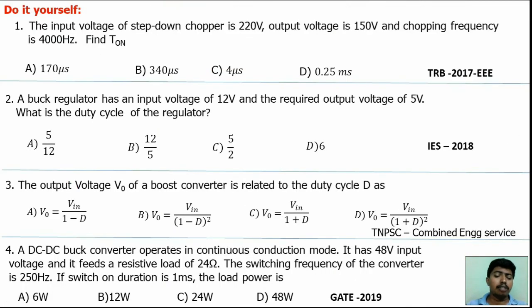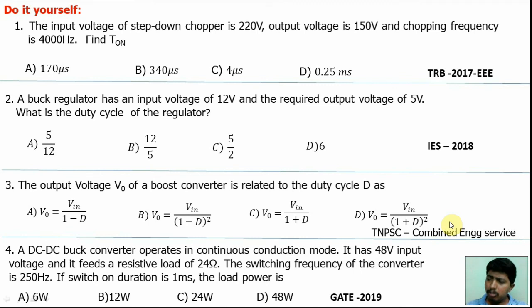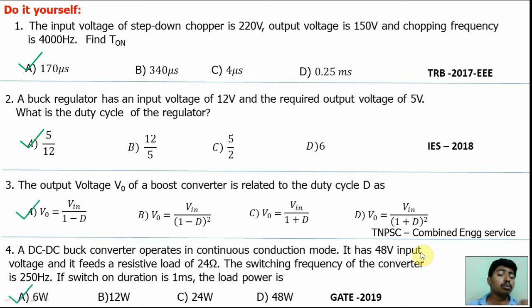Now do it yourself. I have listed four questions. The first question was asked in TRB 2017 EEE examination. The second is from IS 2018 examination. The third is from TNPSC Combined Engineering Service examination. The fourth is from GATE 2019 examination. These are standard exam questions and this concept is very important. My answers: for all four questions, option A is correct. If your answers differ or concepts are unclear, post your doubts in our WhatsApp group for clarification. Keep watching our channel, get good marks in upcoming examinations. Thank you. Click the subscribe button and hit the bell icon for notifications. Like, comment, and share.